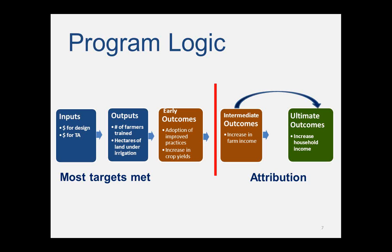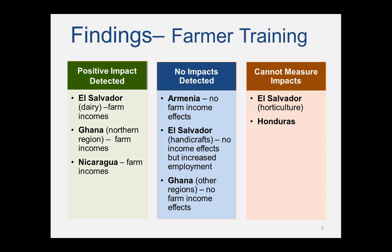Now let's jump to these findings. We have a variety of them, and this variety should not be surprising in the development business. Let's start with some of the positive impacts we measured. The first panel shows positive impacts on farm incomes in three of the countries we were working in. In El Salvador, we found that dairy farmers' incomes roughly doubled as a result of adopting new techniques our project promoted. In Ghana and Nicaragua, there were very different things going on, but we saw significant increases in farm incomes.